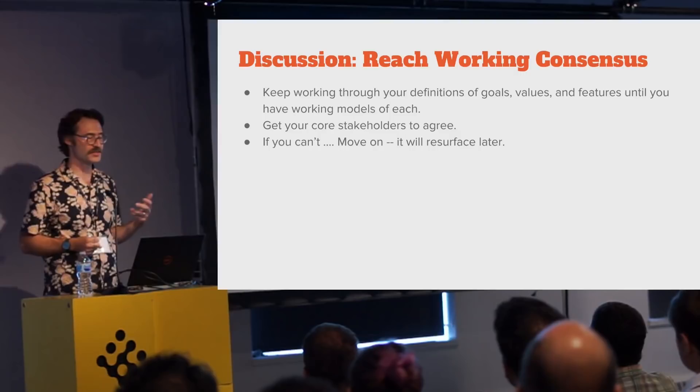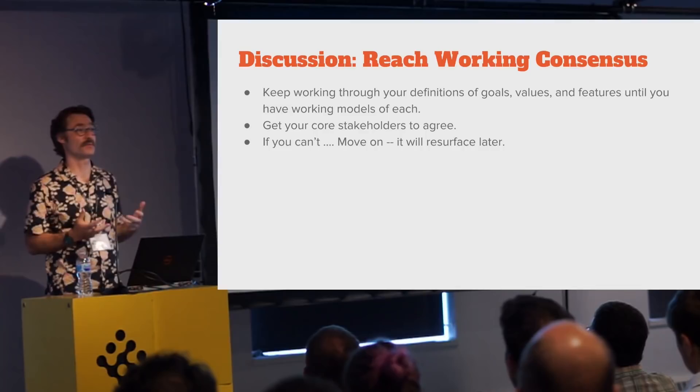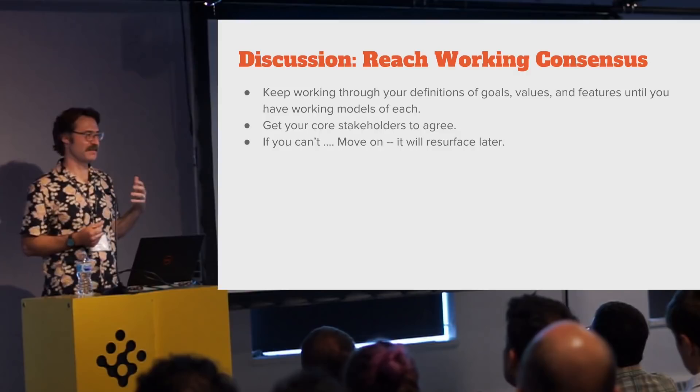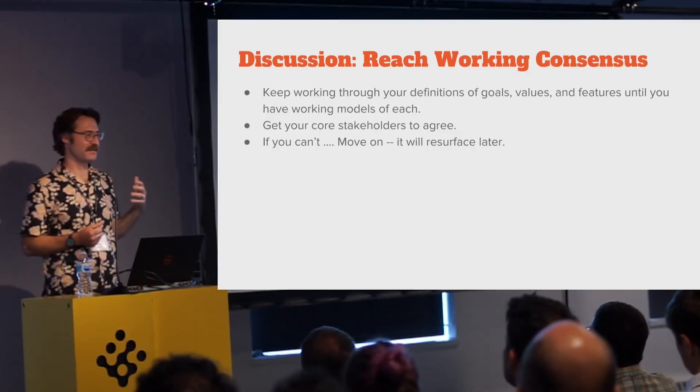You have to rework and restate the cards until you all get an understanding of what they mean for your goals, your values, your features, and agree on them. This might also involve reworking your creative categories if they don't really work for the kind of thing you're making. If you get bogged down, you can always move on — if anything is vague it will come up again in the next step.